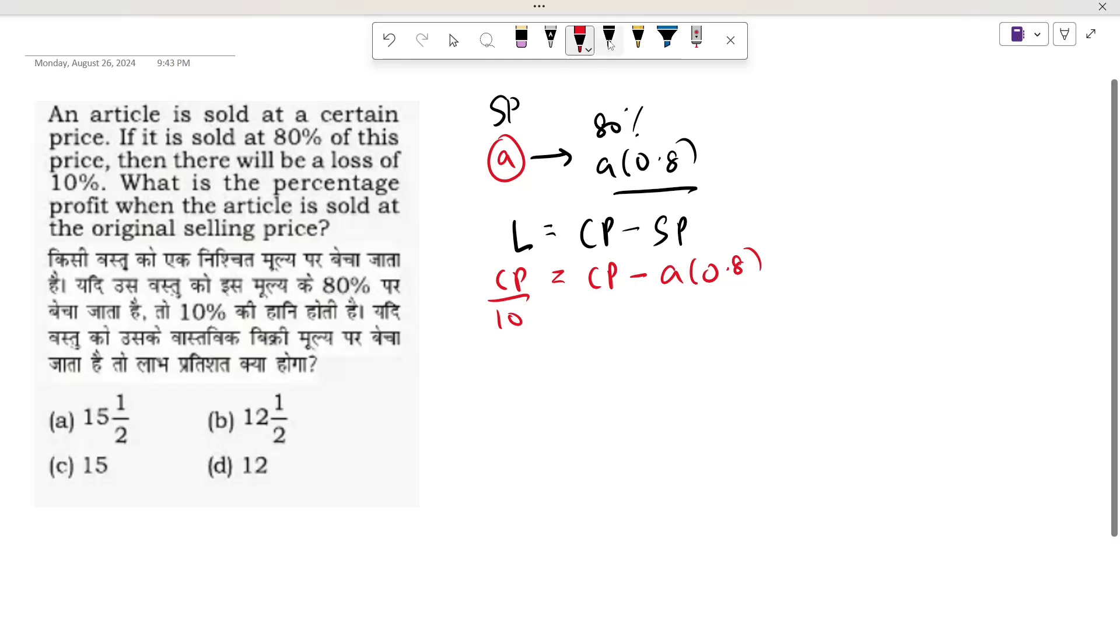This will be our loss. Now let's solve this. CP minus CP upon 10 is equal to A into 0.8. Here we will calculate cost price. Cost price is 9 upon 10 into A into 0.8.